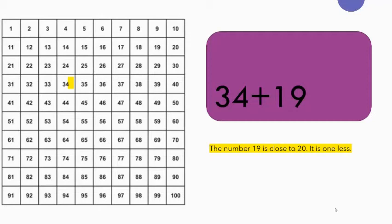So how am I going to use the number? So 34, we highlight the number which is not a near multiple of 10, plus 20: 44, 54. Remember that 19 is one less than 20, so we're going to take away one: 53. So what is the answer to this sum? 34 plus 19 equals 53.